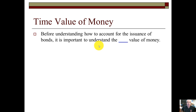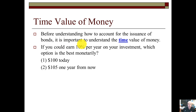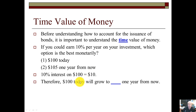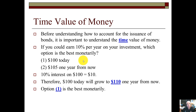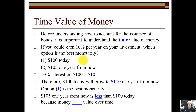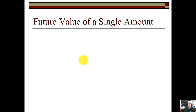So what is the time value of money? Before understanding how to account for the issuance of bonds, it's important to understand this concept. If you could earn 10% per year on your investment, which option is best: $100 today or $105 one year from now? Ten percent interest on $100 gives you $10, so $100 today grows to $110 — making option one best. You'd rather have a dollar today than a dollar tomorrow, because $105 one year from now is actually less valuable than $100 today.